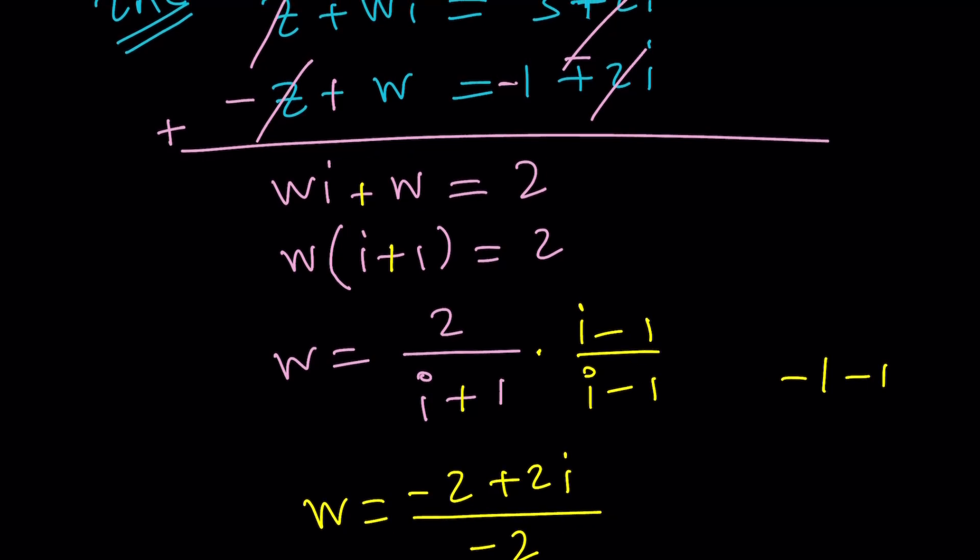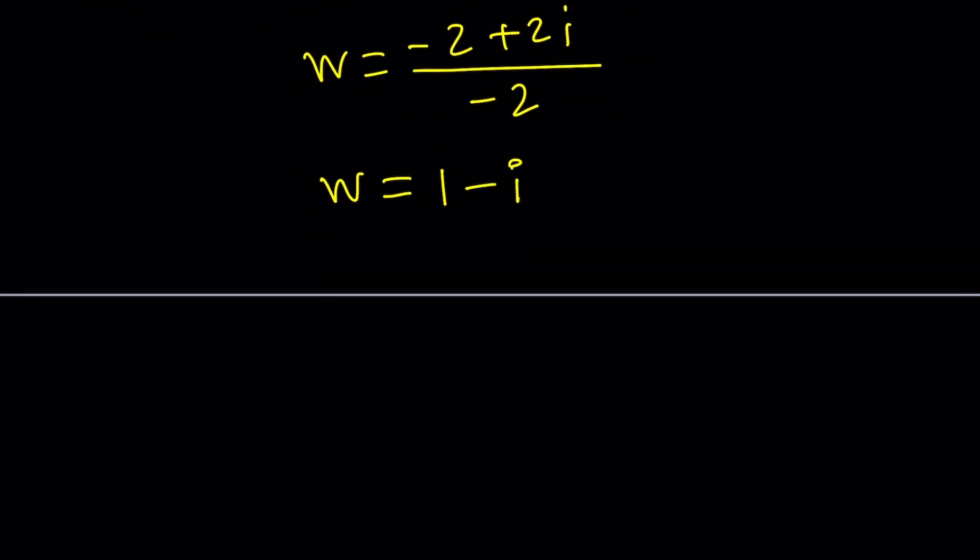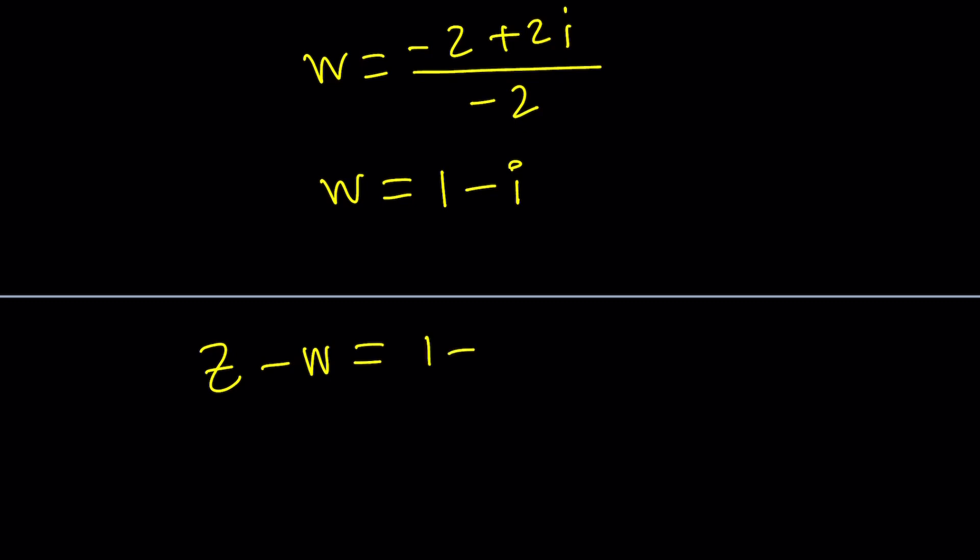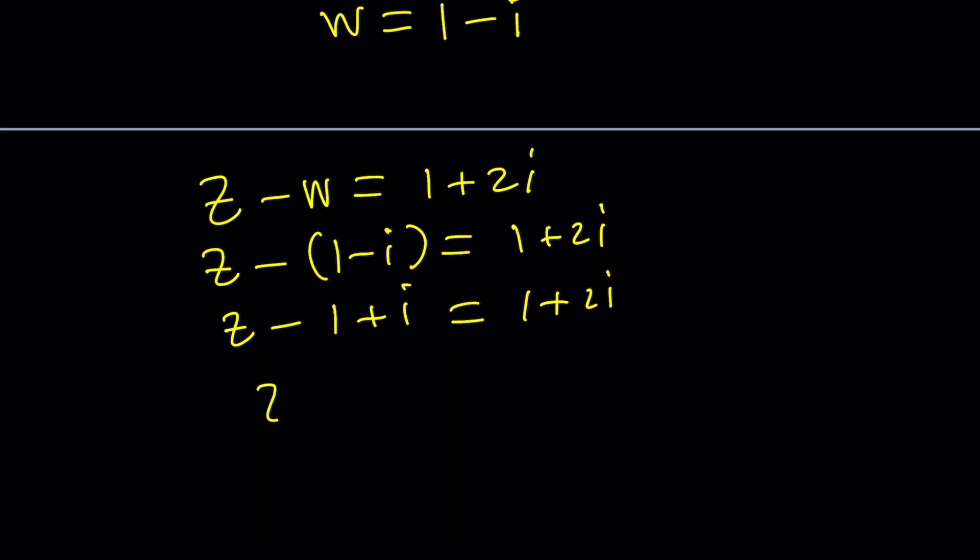Do I have Z? No. Let's use one of these equations, probably the second one. Z minus W is equal to 1 plus 2i. And Z minus 1 minus i. Be careful, use parentheses. And then negate and simplify.